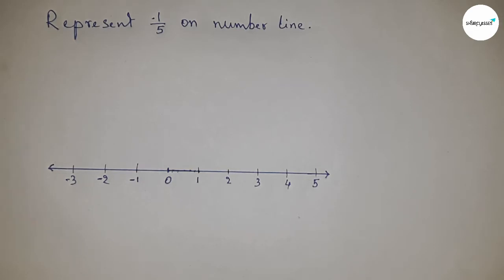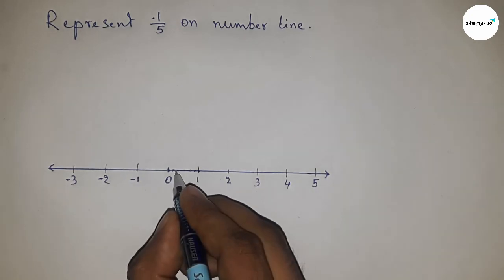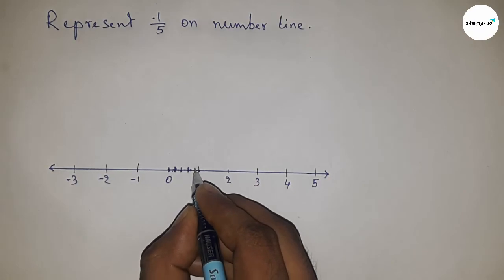the length between zero to one into five equal parts. Now dividing the length into five parts.